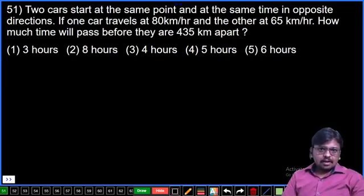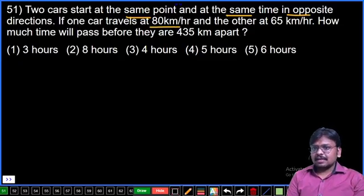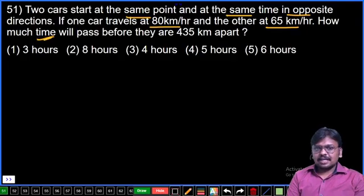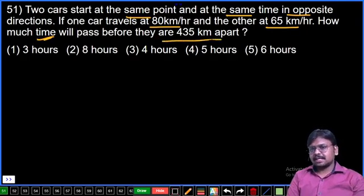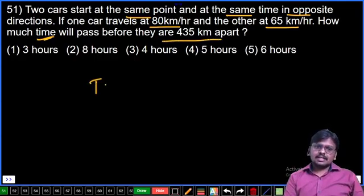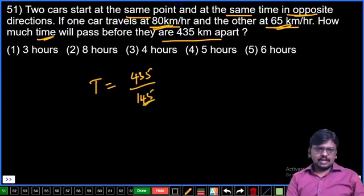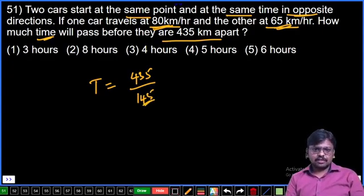SBA apprentice paper explanation, numerical ability. Question number 51: Two cars start at the same point and at the same time in opposite directions. If one car travels at 80 kilometers per hour and the other at 65 kilometers per hour, how much time will pass before they are 435 kilometers apart? Distance is 435, speed for opposite directions: 80 plus 65 equals 145. So 435 by 145, 145 two times 290, three times 435. Answer: three hours, first option.